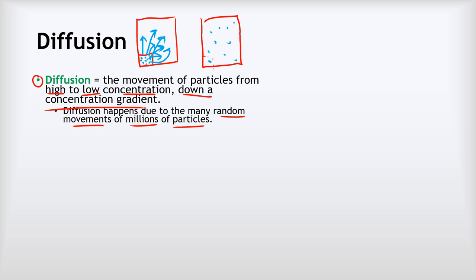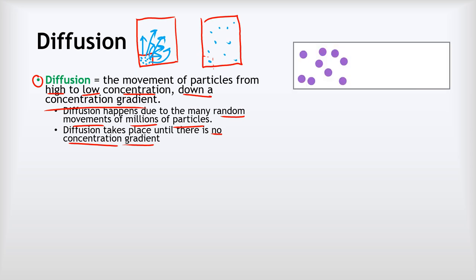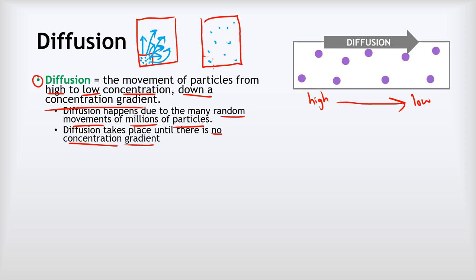Diffusion takes place until there is no longer a concentration gradient. At that point, once the concentration is completely equal, there's no overall movement of particles any longer. In our first illustration, we've got a high concentration of purples on the left and a low concentration on the right. The direction of diffusion will be from left to right, and it will stop once the particles are now evenly spread out with no concentration gradient.